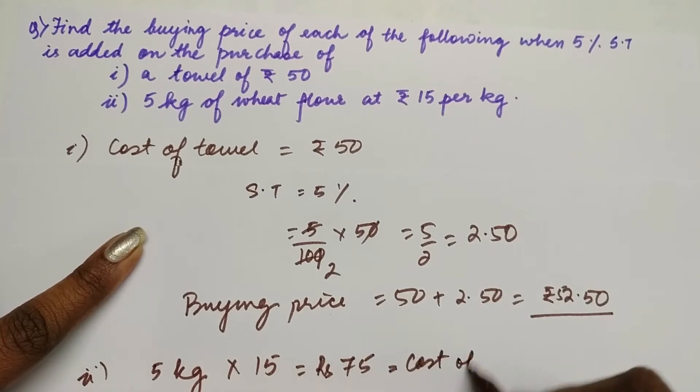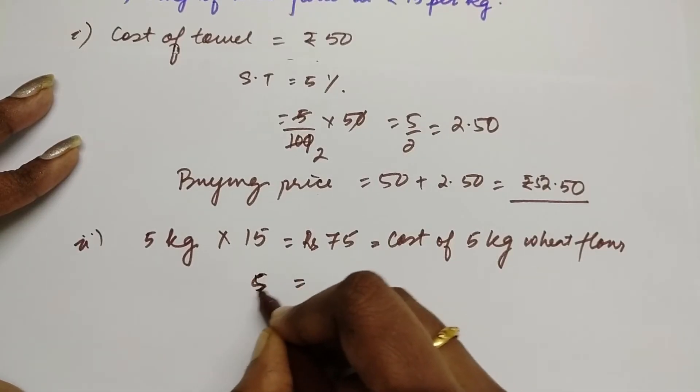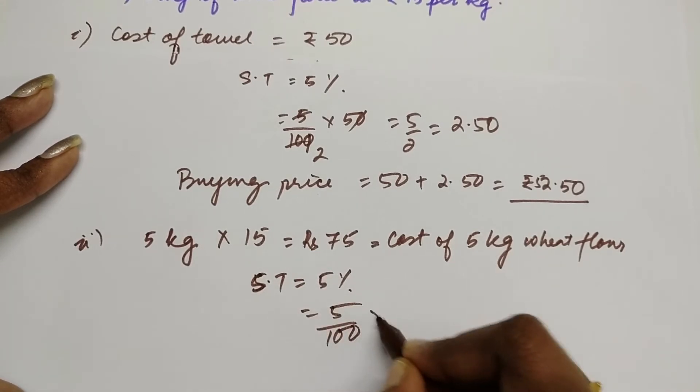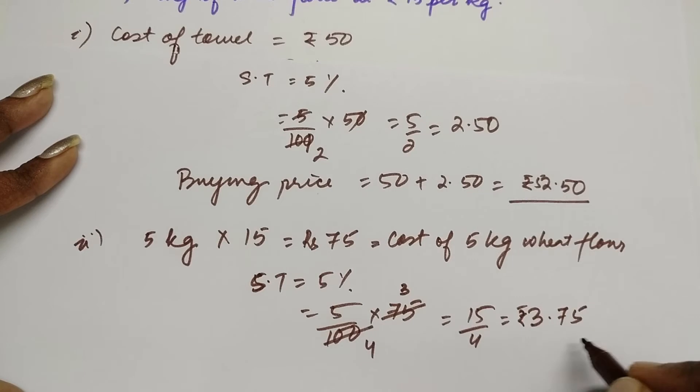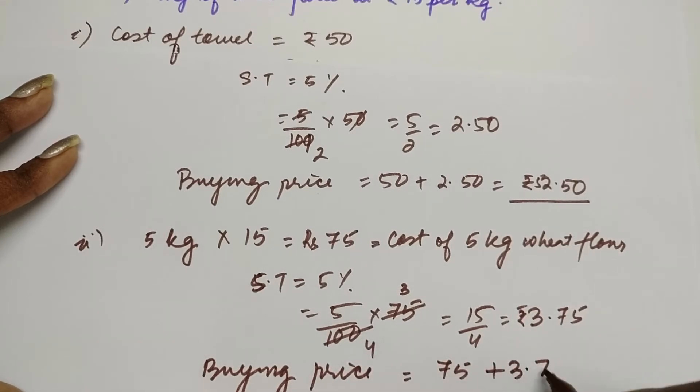And the tax is 5%, the sales tax is 5%, that is 5% of ₹75, which equals ₹3.75. So the buying price here for the flour is ₹75 plus ₹3.75, which is ₹78.75.